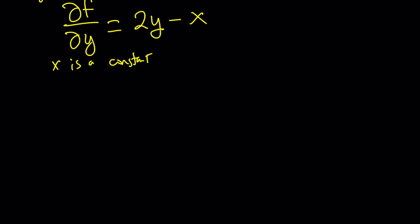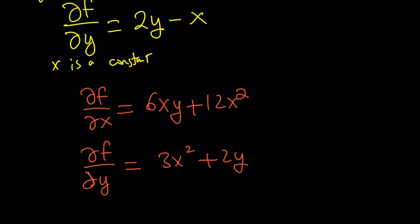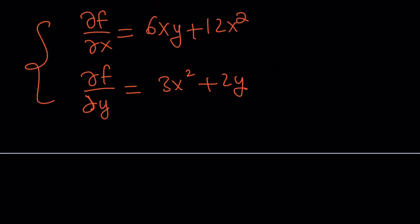So we have the derivative — and by the way, a lot of people say this differently. Some people say "del", but del is also used for something else. You can say "partial f over partial x" or whatever you want to say. It's just the partial derivative, which means in this case y is constant, and in the second case x is a constant. So this is my system of equations — these are partial derivatives, and I need to find f from here.